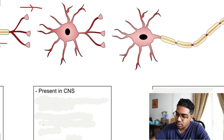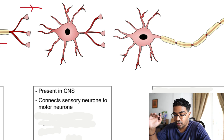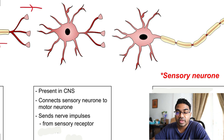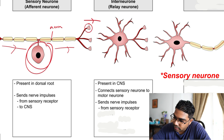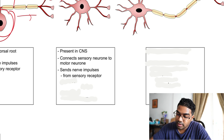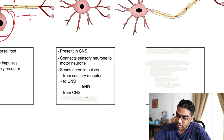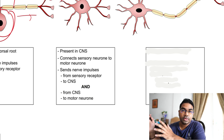The role of the interneuron is to connect the sensory neuron to the motor neuron. The synaptic knob of the sensory neuron connects to the dendrites of the interneuron, which receives the nerve impulse from the sensory neuron and sends it to other parts of the CNS. It also receives nerve impulses from the CNS.